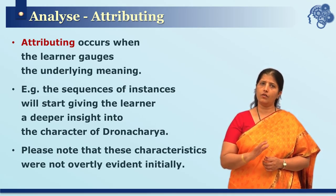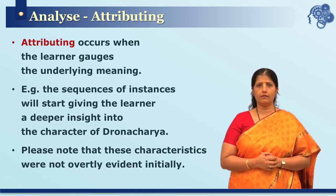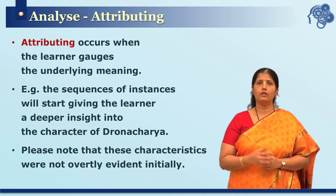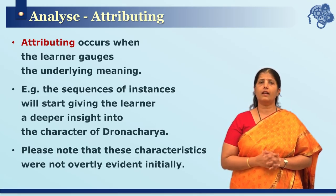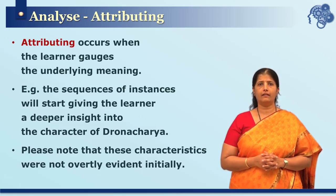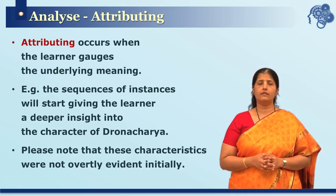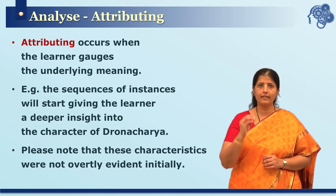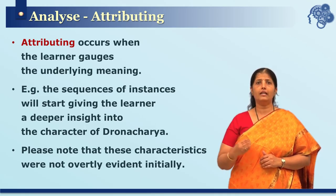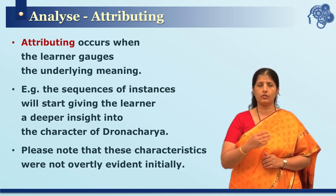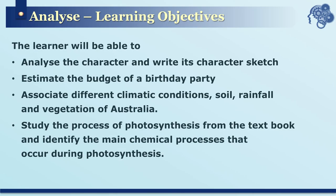Attributing occurs when the learner gauges the underlying meaning of the message. In our example, once the learner has identified events and organized them into a sequence, viewing these may give a different perspective and deeper insight into the character of Dronacharya. The characteristics identified in the character sketch should not be overtly evident from the story — the learner must go through the entire process of analyzing before it can be said that analyzing has taken place.